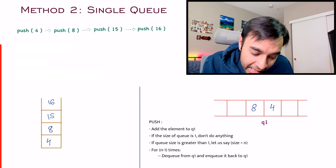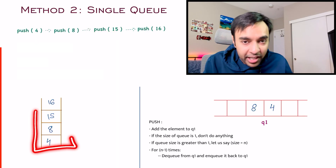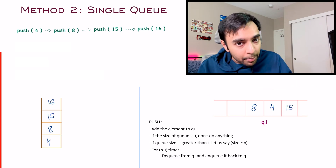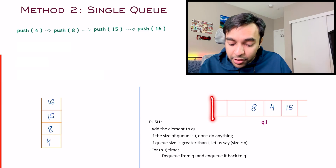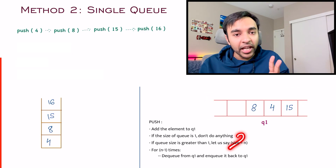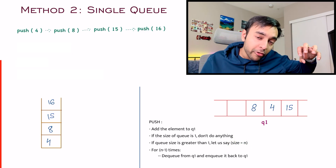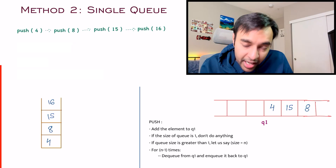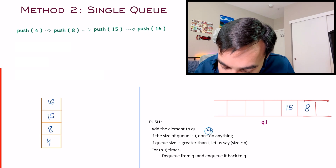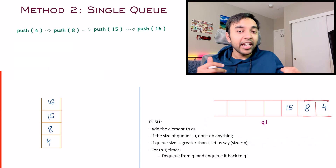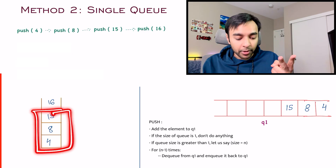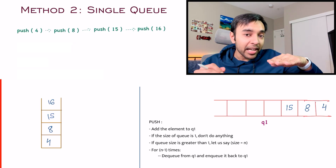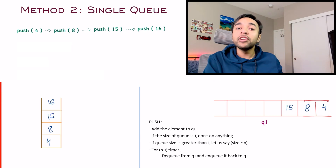The next push is 15. In the stack, 15 goes on top. In the queue, you add 15 first, and now the queue size is 3, so you perform the operation 2 times. You pop 8 and insert it back, then pop 4 and insert it back. Now if you have to pop from the stack, 15 gets popped out. And from the queue, 15 also gets popped out. This is how we maintain the balance and mimic the stack operations.